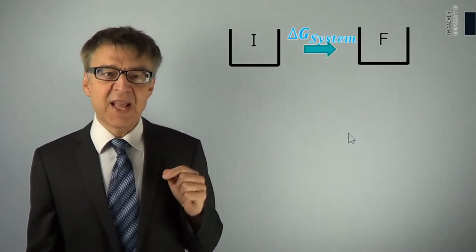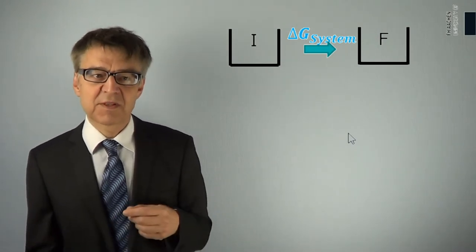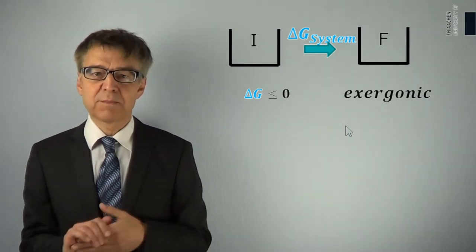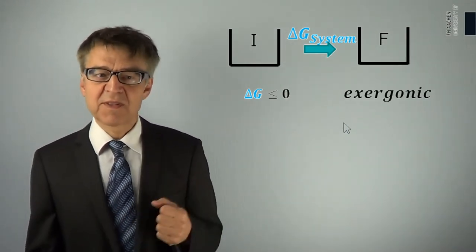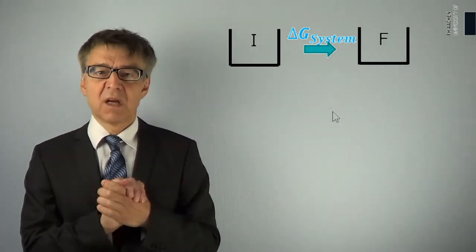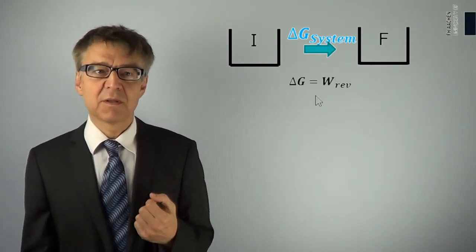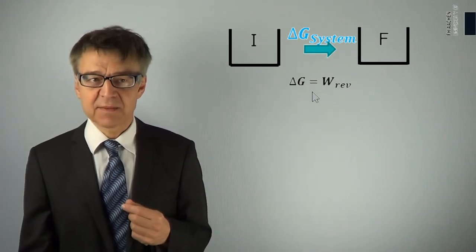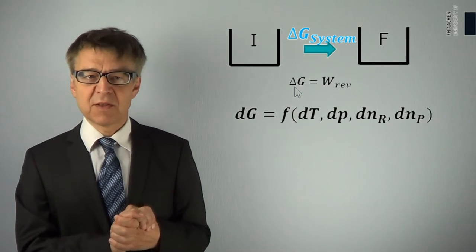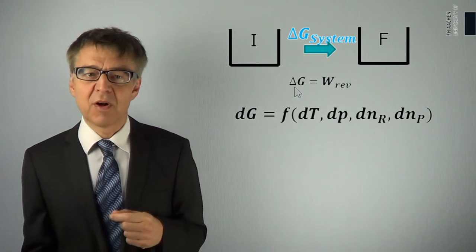If delta G is negative, the process is possible — this is called exergonic. If delta G is positive, the process is not possible — this is called endergonic. Delta G can be measured directly as reversible useful work, for example in galvanic cells. There are formulas that describe the dependence of G on temperature, pressure, and the quantities of substances involved in the system.